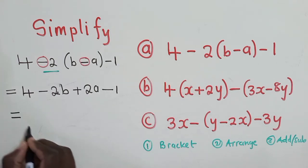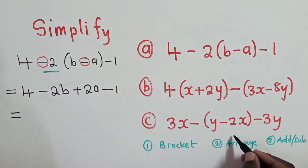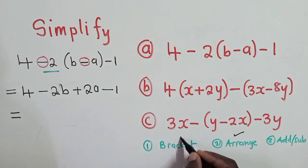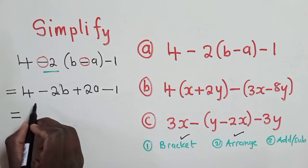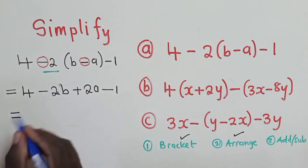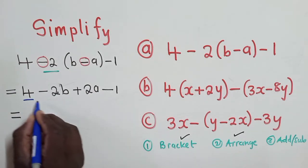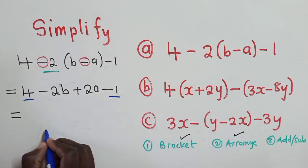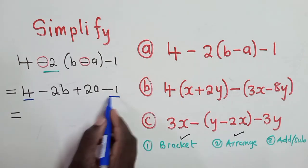Next, we say equal to, we come now to this point. We are done with getting rid of the brackets. So now we come to arranging. So we check which terms we've got, which terms are alike. So we've got a 4 here without a variable and a negative 1. So these are like terms.